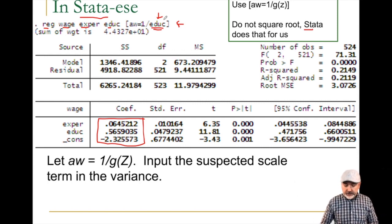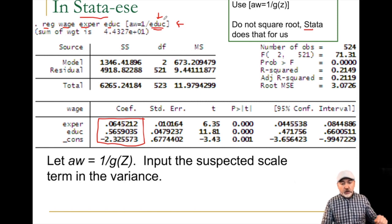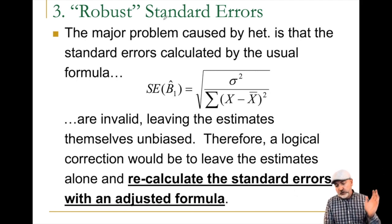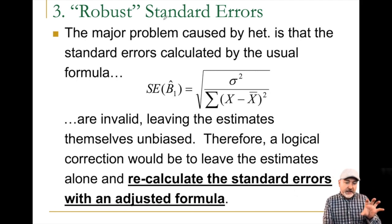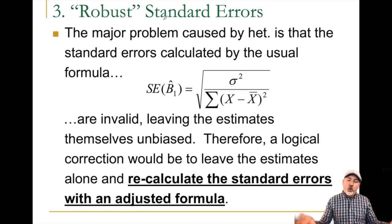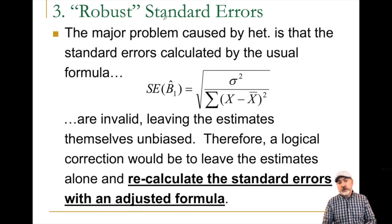Finally, what happens when you try and try with the weighted least squares and nothing seems to work — you can't specify the appropriate heteroscedasticity variance equation? Then we go to the robust standard error option.